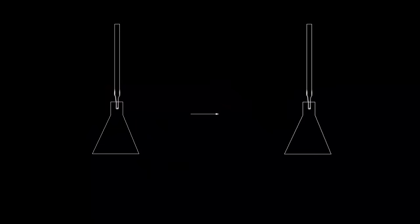A titration is a procedure for determining the concentration of a solution. Let's say we're starting with an acidic solution — some hydrochloric acid, HCl. We know the volume of HCl: we're starting with 20.0 milliliters. But we don't know the concentration — that's the question mark. We can find out that concentration by doing a titration.